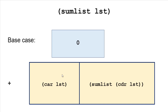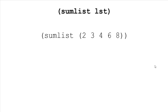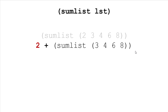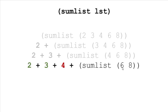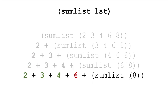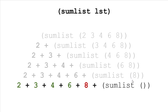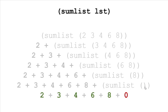Our recursive case, we're going to add the car to the sum of the cdr. So the way that works: we pass in a list to our function. Then we're going to add two to the sum of the rest of the list. To calculate the sum of the rest, we add three to the cdr of the list, then four to the cdr of that, then six to the cdr of that, and finally eight to the sum of the empty list, which is zero.